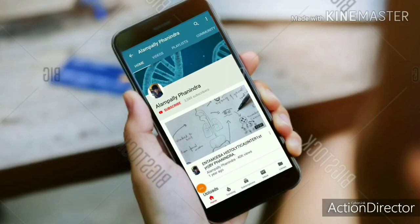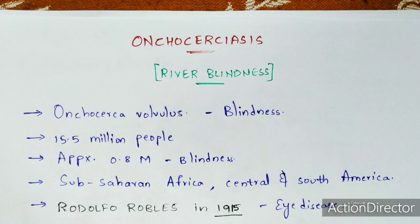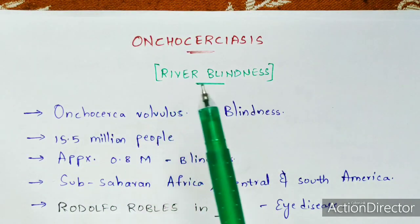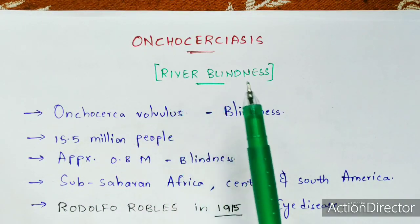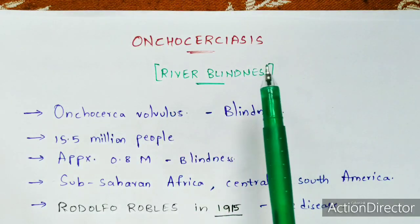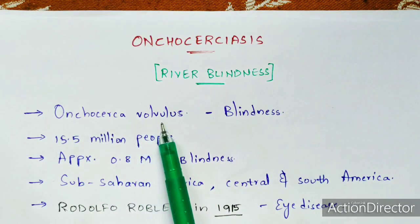In this video, let us discuss about the disease known as onchocerciasis, which is also called river blindness. It is a parasitic disease mainly caused by a parasite known as Onchocerca volvulus.